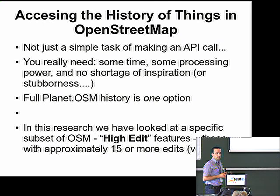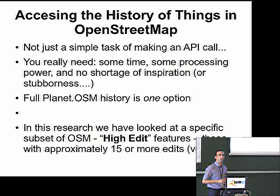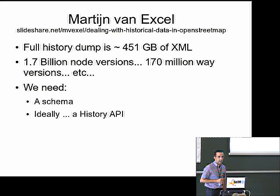You could download the full Planet OSM history, but that's quite a task in itself. So what I've chosen to do is look at a specific subset of OpenStreetMap. Some of the work in Wikipedia quality looks at the featured articles rather than every article. So how about high-edit features — those with about 15 or more versions of edits? The full history dump is a massive file; getting things out of it is quite awkward.